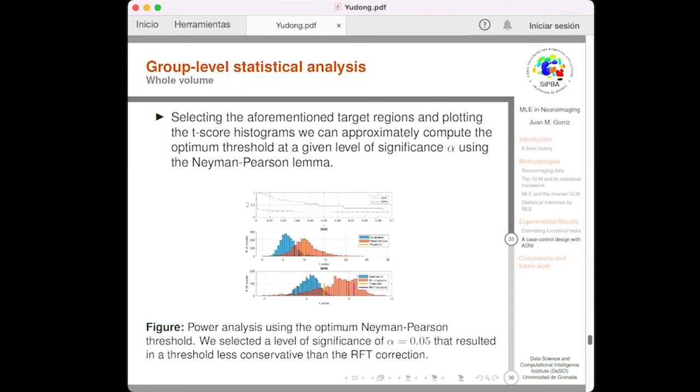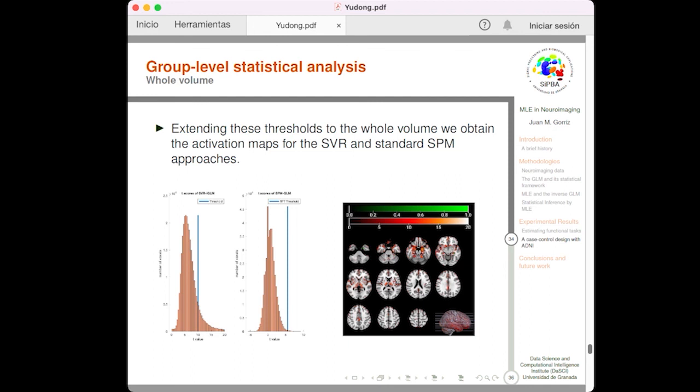Well, the analysis using random field theory provides us a threshold to obtain activation maps. So if we select the aforementioned target regions and plot the T-score histograms, we can approximately compute an optimum threshold based on the Neyman-Pearson lemma, assuming that both regions are negative and positive. So if we compare with the later value, with the one we used in previous sections, we can really see the over-conservative nature of a standard family-wise inference, comparing with this Neyman-Pearson value. If we extend this threshold to the whole volume, we can obtain the novel activation maps for the SVR and the standard SPM. And we can see how the number of voxels detected by the SVR approach is higher than the ones obtained by the SPM approaches.